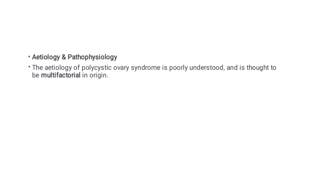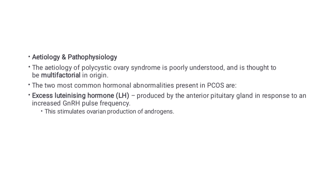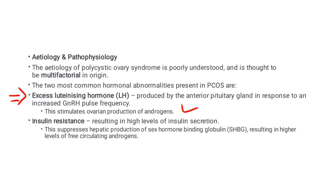The pathophysiology of polycystic ovarian syndrome is poorly understood and is thought to be multifactorial in origin. The two most common hormonal abnormalities present in PCOS are: first, excess LH (luteinizing hormone), which is produced by the anterior pituitary gland in response to increased gonadotrophin-releasing hormone pulse frequency, which stimulates ovarian production of androgens.